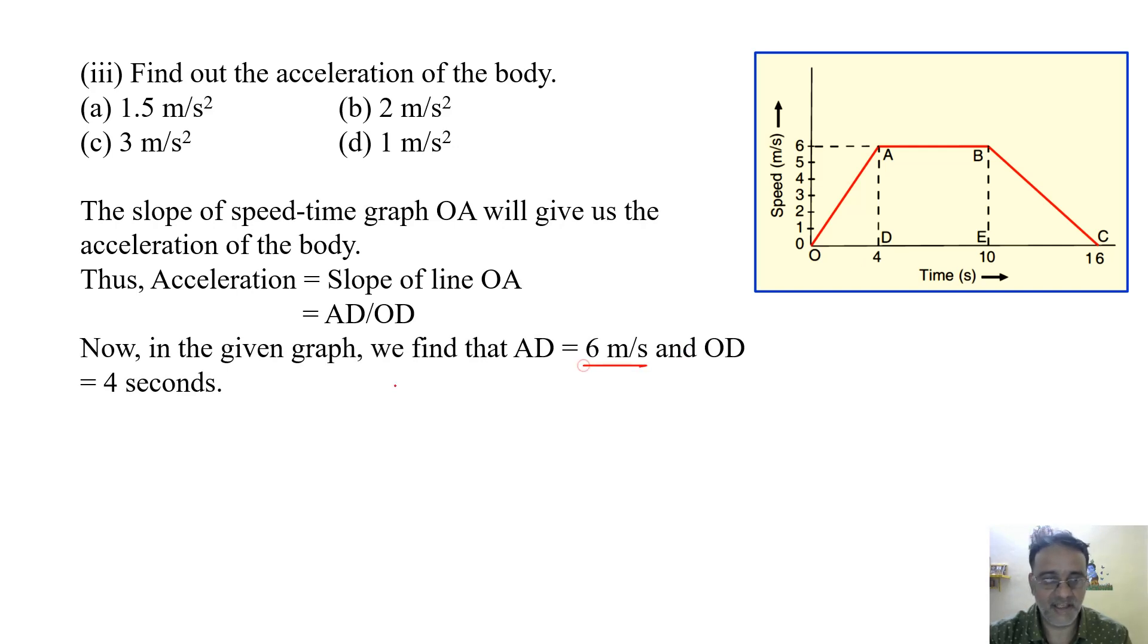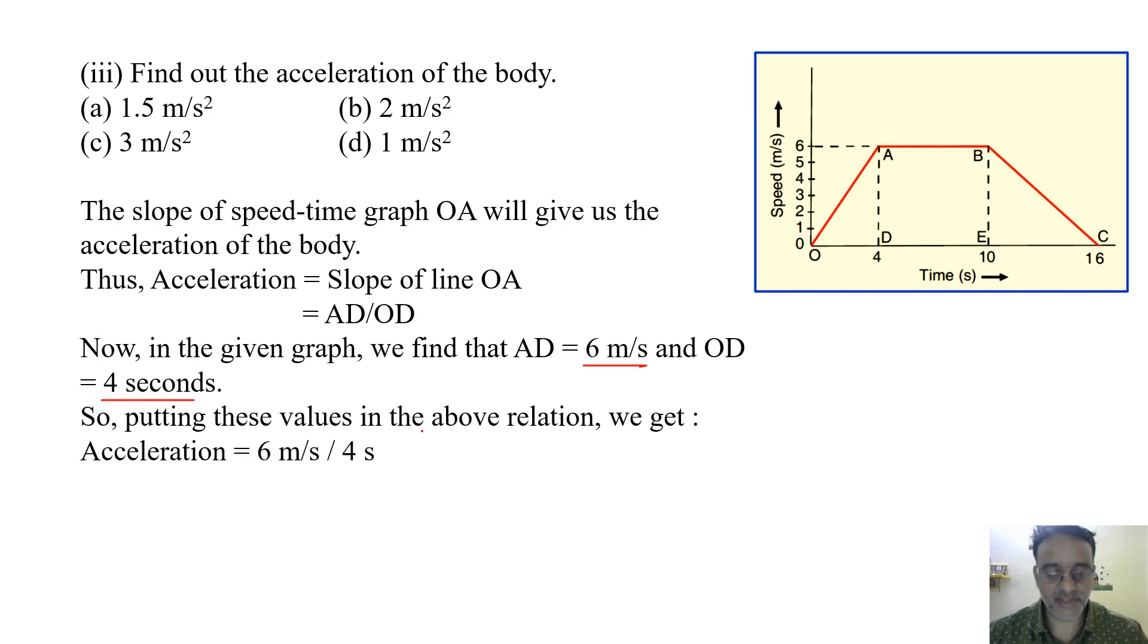6 upon 4 will give the acceleration. So 6 upon 4 is 1.5 meter per second square. So the correct option is A.